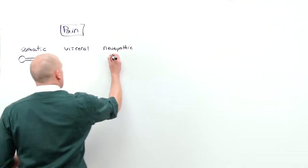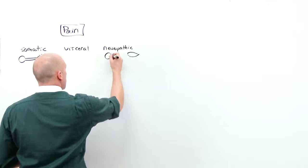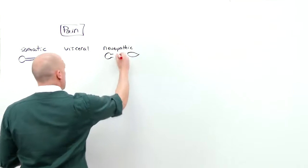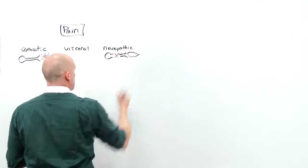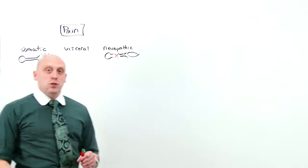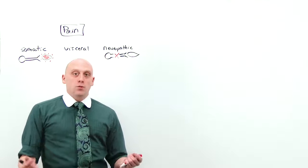Neuropathic pain is where the thing that's being innervated has no problem, but the nerve is damaged. So the nerve is telling the brain that there's pain even though there's nothing wrong. This is usually in the way of tingling or burning. Think of diabetic neuropathy or radiculopathy.